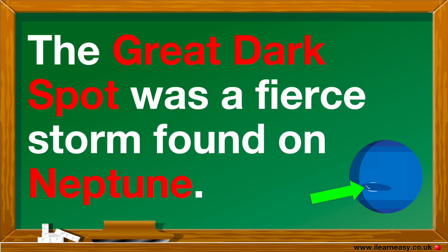The great dark spot was a fierce storm found on Neptune. It was one of the strongest and fastest storms found in our solar system, but it didn't last as long as the great red spot on Jupiter. Other storms were also found on Neptune after this.